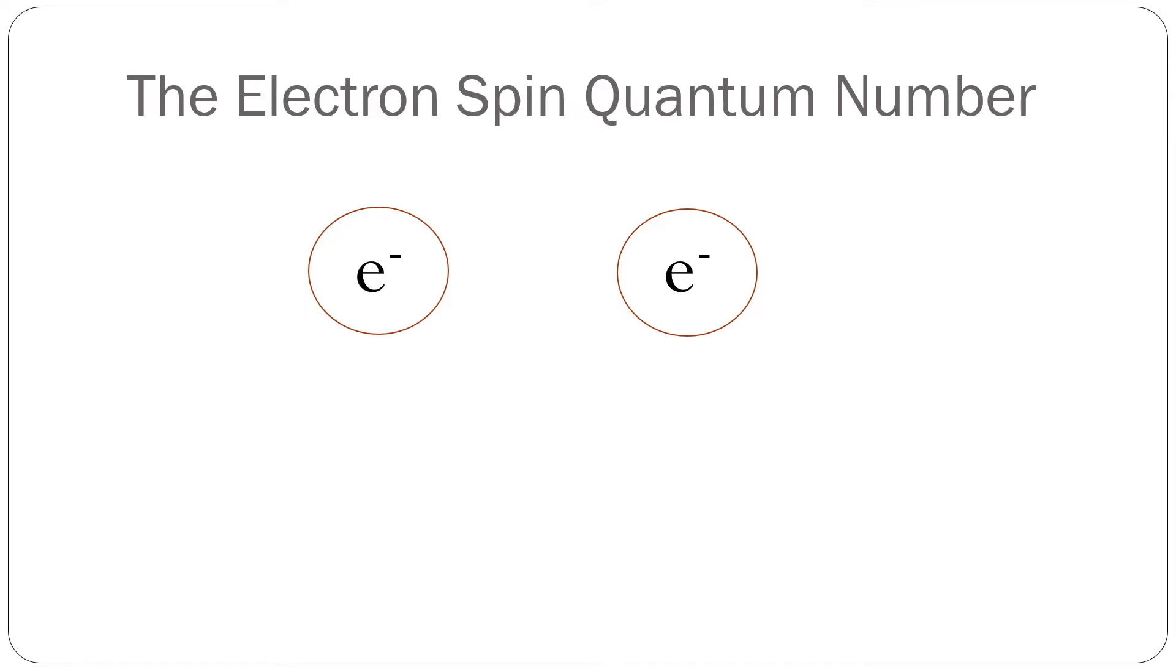For the first year general chemistry student, however, there are some important takeaways. First, historical evidence shows that the electron behaves as though it were spinning. It has a magnetic moment, which is produced from a spinning charge, at least in classical mechanics. This is why the name electron spin was given.